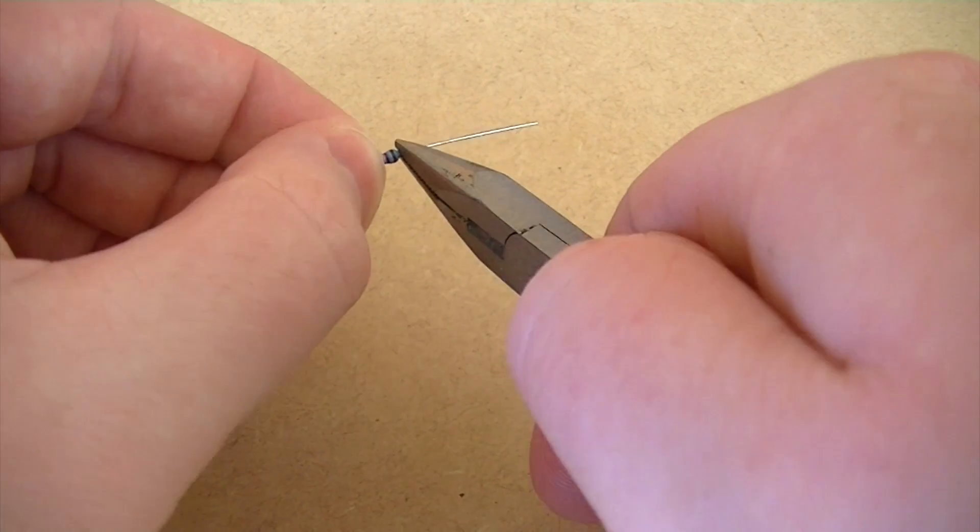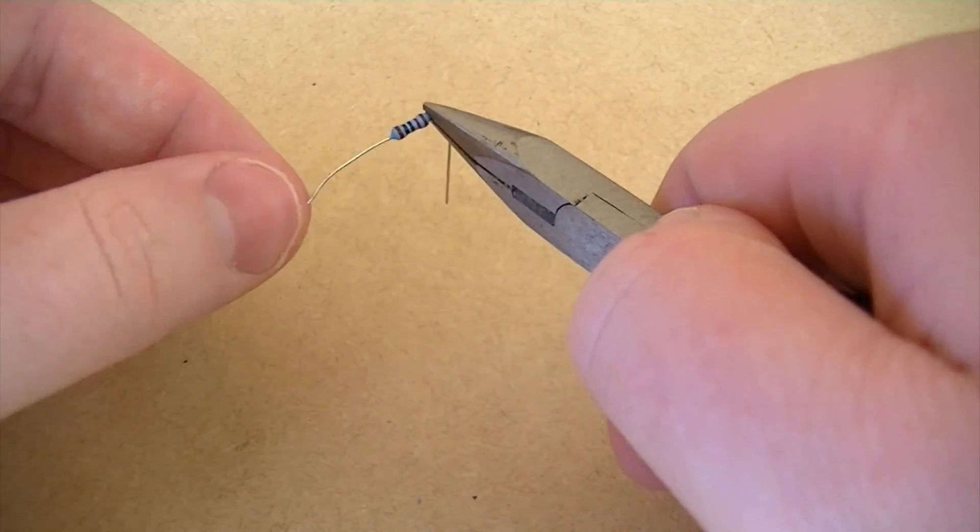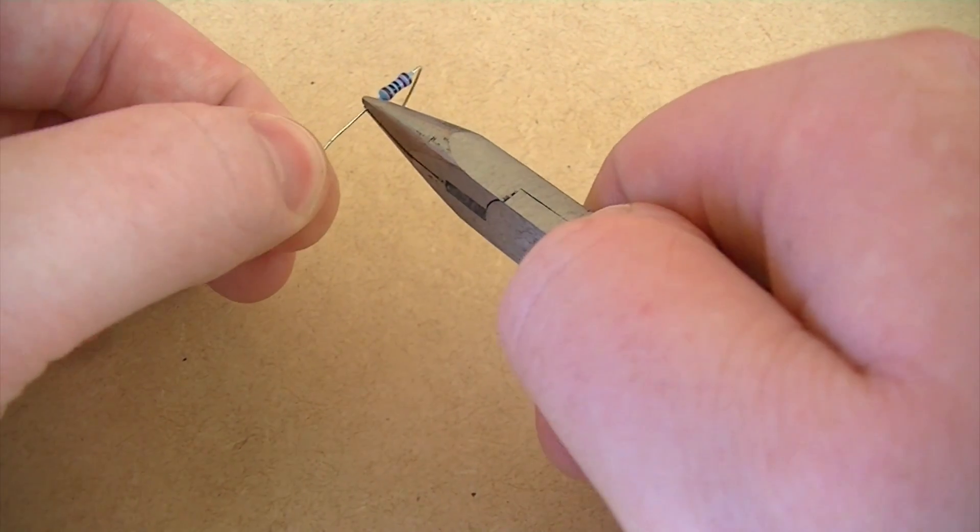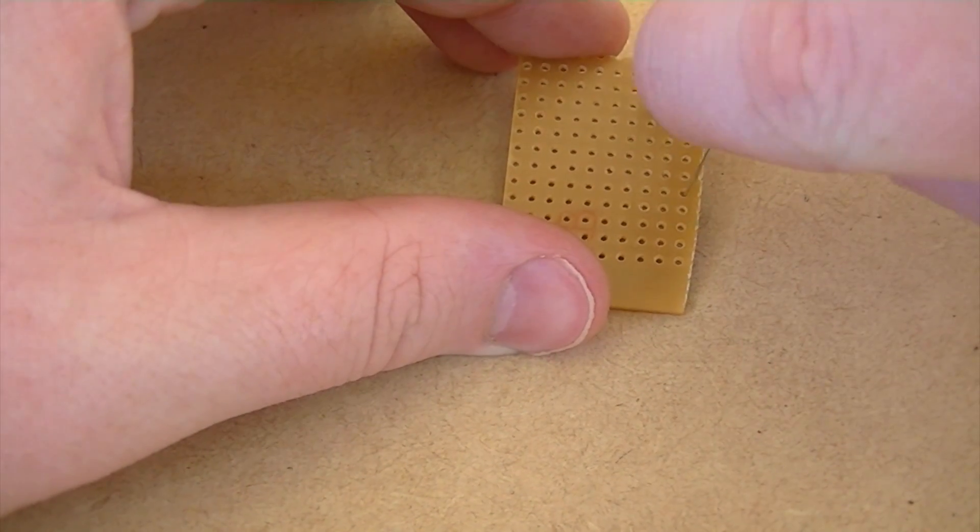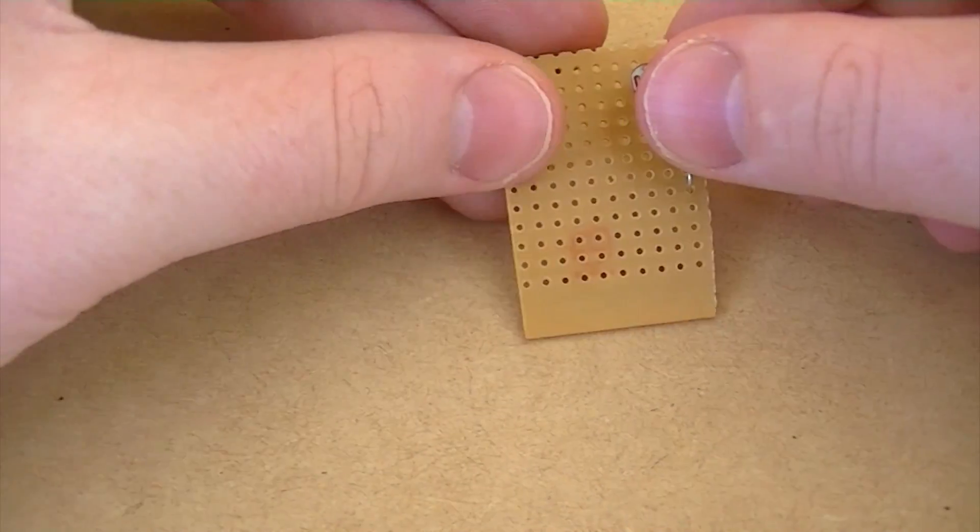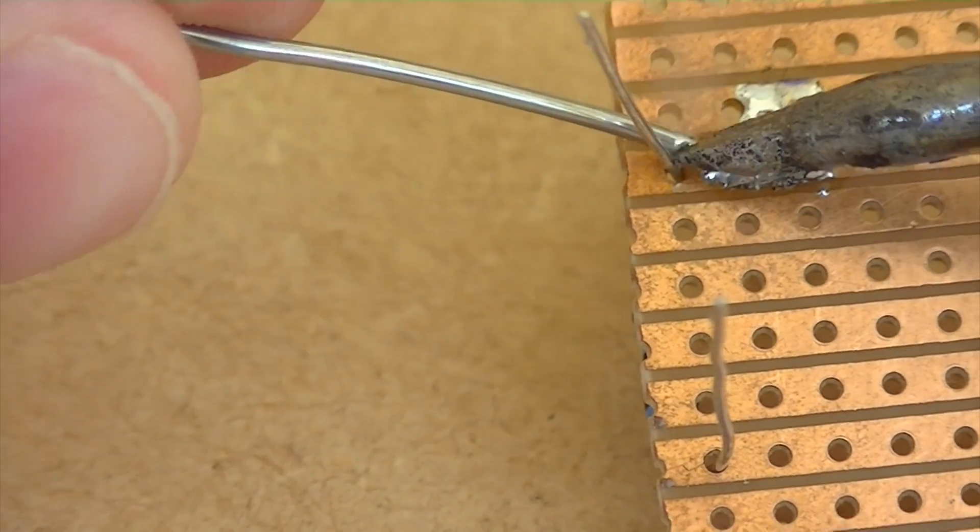Now bend the legs of the 10k ohm resistor like so. This will allow us to easily place it into the board. Then solder it in position.